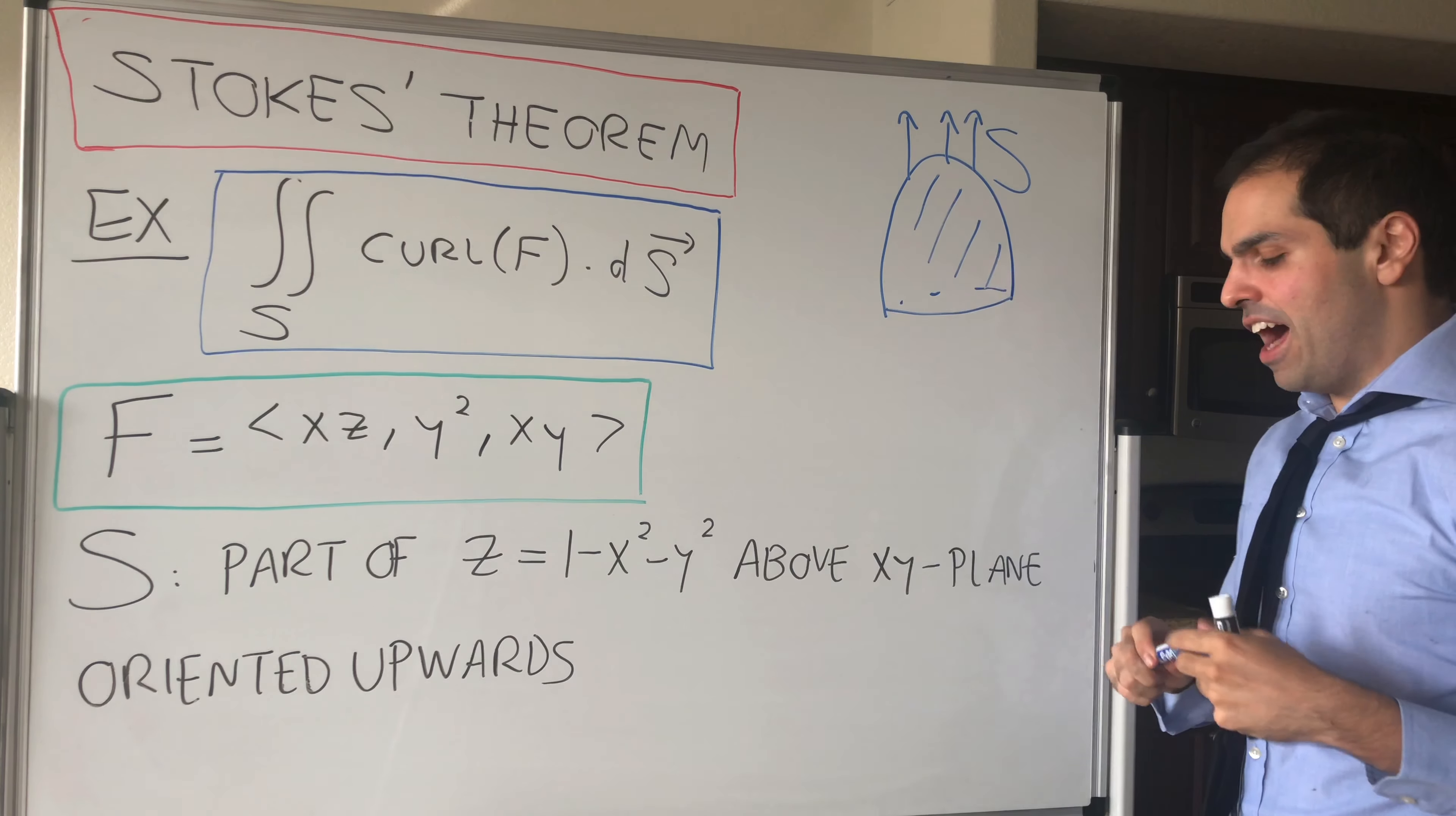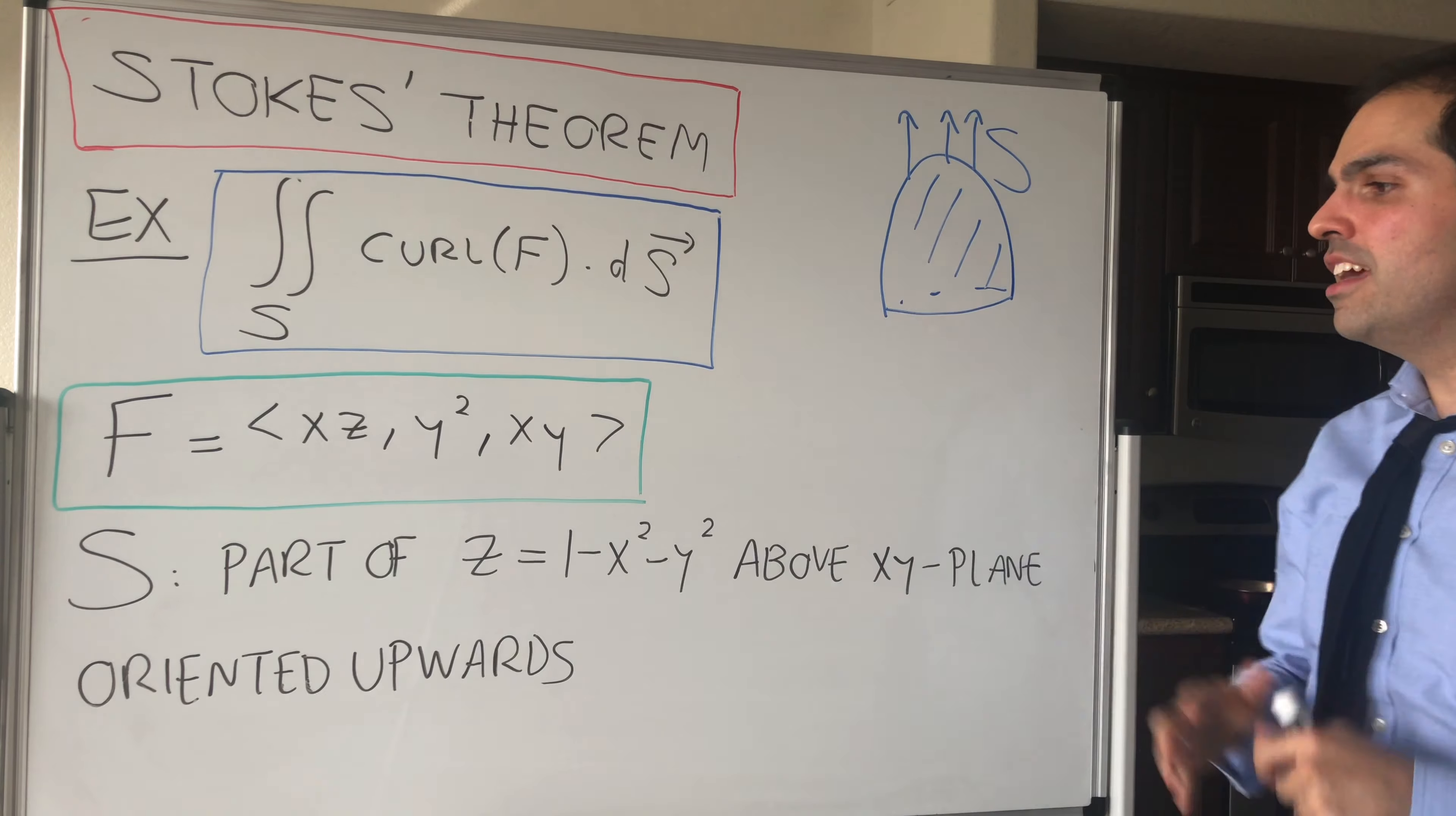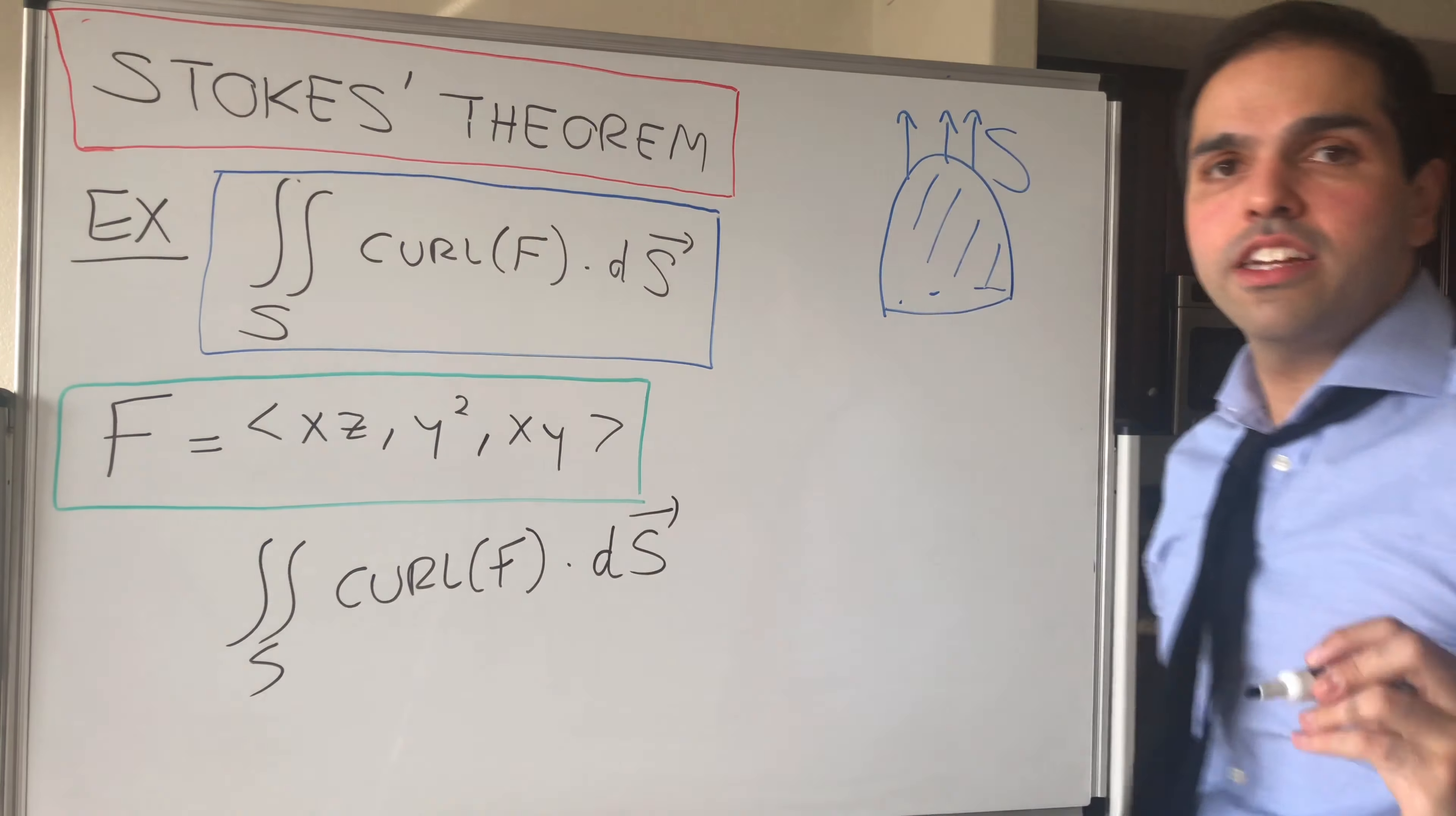Now, there's two ways of evaluating this. The silly way would be to first calculate the curl of F and then evaluate the surface integral of that, but that's way too much work. Luckily, there's a theorem that allows us to simplify this tremendously called Stokes' Theorem, and without further ado, here it is.